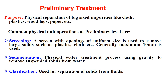First we will discuss preliminary treatment. Here we are considering common wastewater treatment from all industries, especially food industries. The purpose is physical separation of large-sized impurities like cloth, plastic, wooden logs, or paper. In the case of meat and dairy industries there can be muscle pieces, bone pieces, skin, and even plastics.